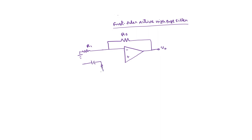For the low pass filter, capacitance was here and resistance was here. Now this is reversed. This is the circuit diagram of the first order active high pass filter. I will derive the transfer function and show that this acts as a high pass filter.